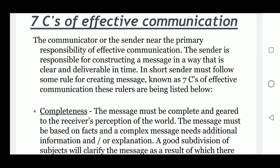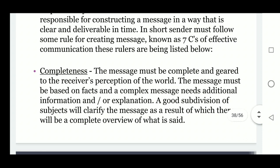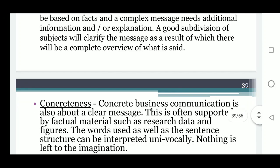The seven C's of effective communication: the communicator or sender bears the primary responsibility of effective communication. The sender is responsible for constructing a message that is clear and deliverable in time. The first C is completeness — the message must be complete and geared to the receiver's perception of the world, based on facts, and a complex message needs additional information and explanation. A good subdivision of subjects will clarify the message, resulting in a complete overview of what is said.